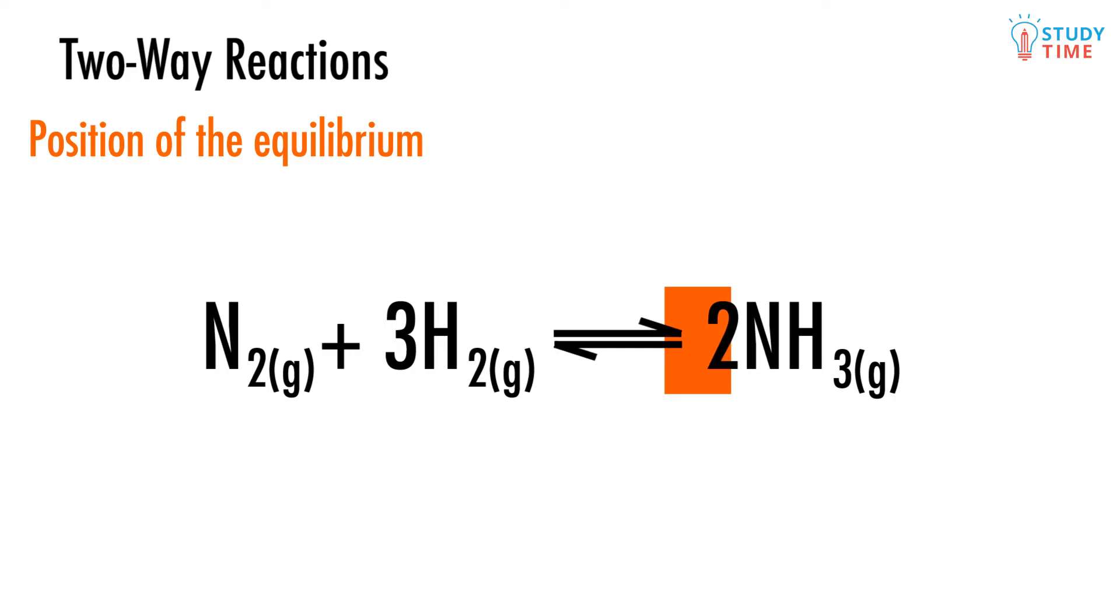We'll see more NH₃ getting produced, and there'll be less hydrogen and less nitrogen. Remember that equilibrium will still be reached after this change occurs, but its position will have shifted.